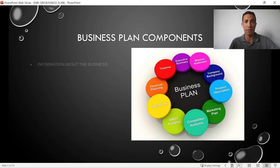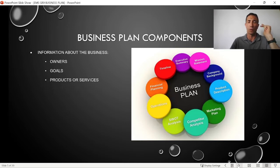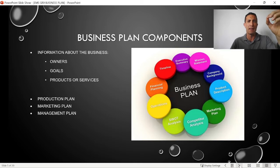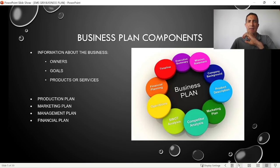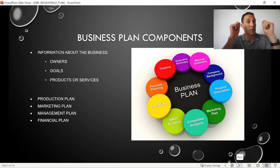So what does a business plan comprise of? A business plan's components include all the information about the business: who the owners are, what the goals are — including your vision, mission, goals, and objectives — your product or service description, company background, production plan, marketing plan, management plan, competitors, financial plan, and a SWOT analysis. You also have an executive summary, which is almost like a one-pager. If you can get people to read that and they're interested, you've got them hook, line, and sinker.